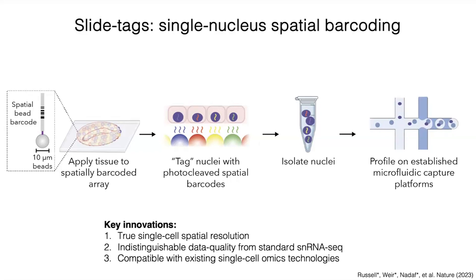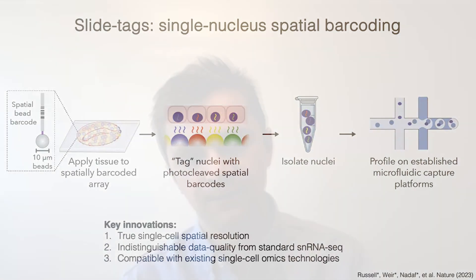We then take these barcoded nuclei and use them as input into established single nucleus sequencing platforms. Slide tags offers three key innovations: it gives us true single cell data with spatial resolution, and the data type and quality is indistinguishable from standard single nucleus RNA sequencing platforms. We can put these nuclei into any established single nucleus RNA sequencing platform, including single nucleus sequencing multi-omic technologies, and we can use existing single cell analysis tools without having to redevelop the analysis pipelines.